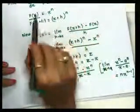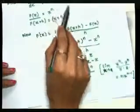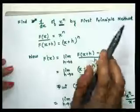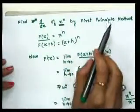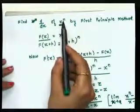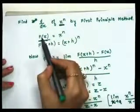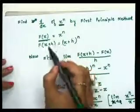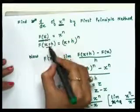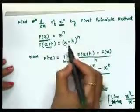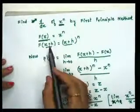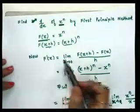Let us review once more: to find d/dx of x^n by the first principle method (pratham siddhant ki reet se vikalan karna), the first step is always to write the given expression as f(x). Then the next step is to replace x with (x + h) to find f(x + h). This gives us the limit formula to work with.